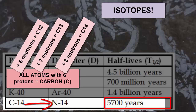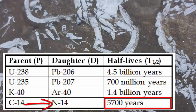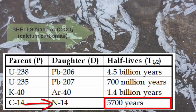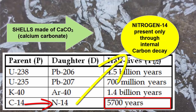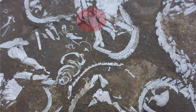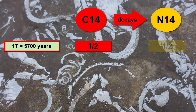Any naturally occurring substance with carbon in it will have about 99% carbon-12, 1.1% carbon-13, and some trace amounts of the radioactive carbon-14 isotope. What makes carbon-14 and nitrogen-14 a very good isotope pair is that most substances that contain carbon in a structure, such as shells made of calcium carbonate, do not also have nitrogen in them. So any nitrogen-14 we see in the material will have come from the decay process. Every 5,700 years, half of the original carbon-14 has decayed to nitrogen-14.